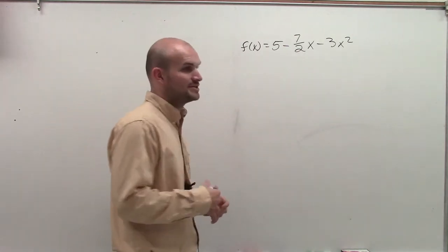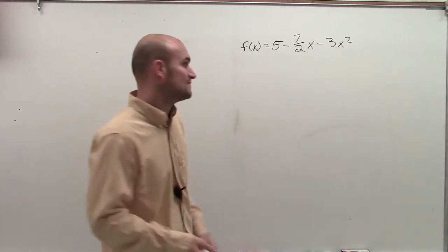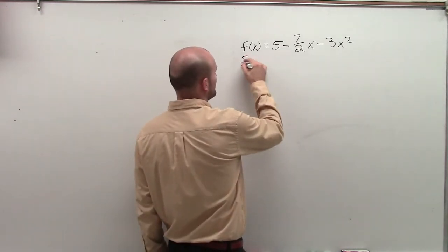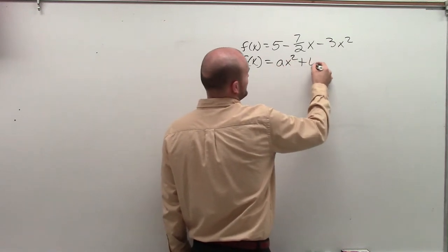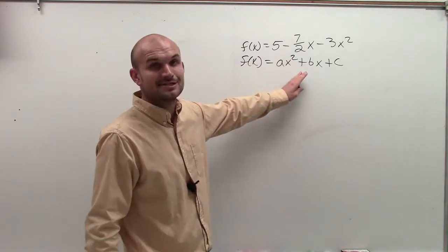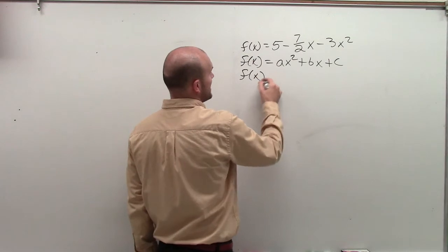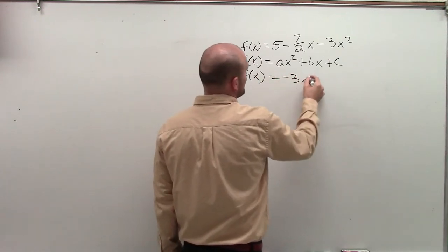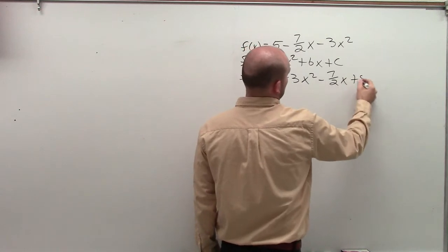The first thing I need to do is put it in descending order, or put our degree always first. We want to put it in our form of f(x) equals ax squared plus bx plus c. That's what we call descending order, where we have our highest degree first, and then we go in descending order from there. So this function can be rewritten as f(x) equals negative 3x squared minus 7 halves x plus 5.